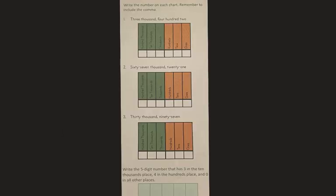On the middle section on page eight, it says write the number on each chart. Remember to include the comma. Okay, so if you watched my review video for how to do the place value, you would have remembered that we said circle the word thousand and look at what comes before and behind that word. That will help you figure out where you need to put your digits in the place value chart. Okay, so this one says three thousand four hundred two. You have to read very carefully.